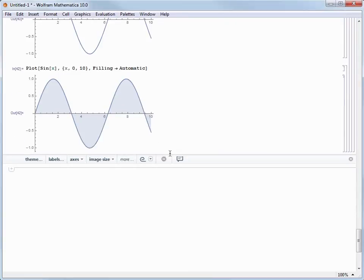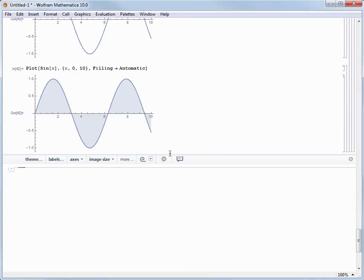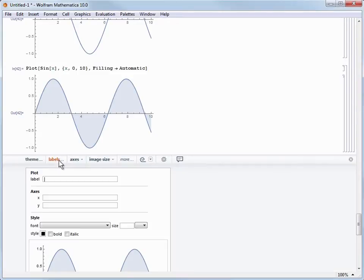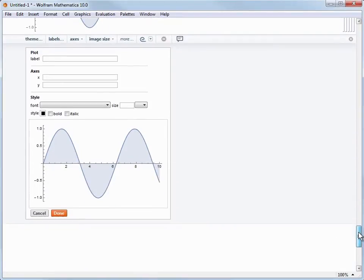Now, let's add a label to our plot. One of the choices on the Suggestions bar is Labels, and clicking that opens an interactive menu in which we can give a general label for the plot, as well as labeling the X and Y axes.